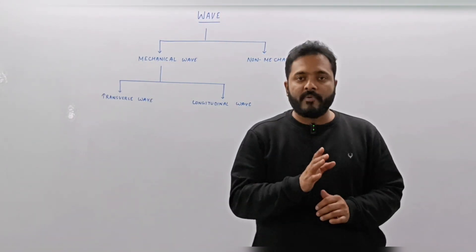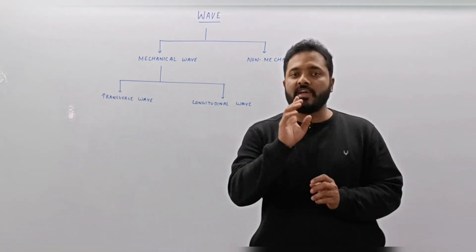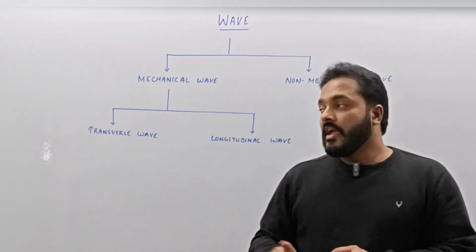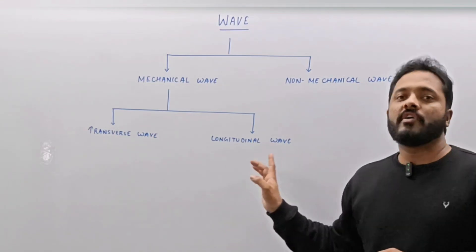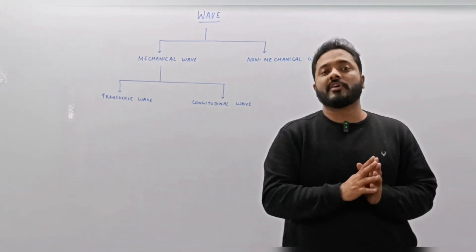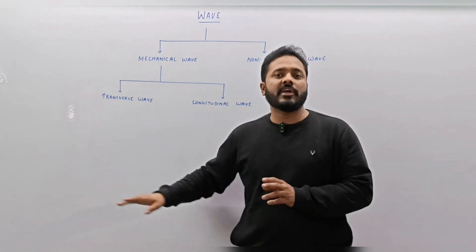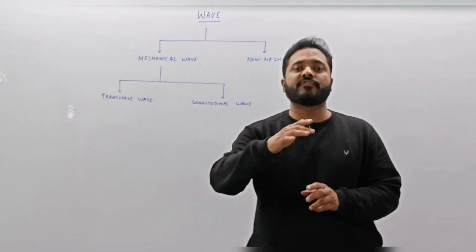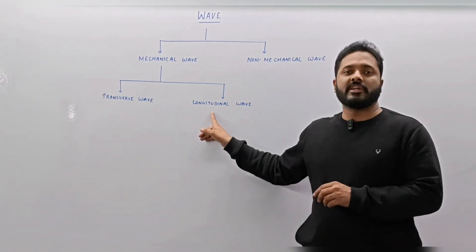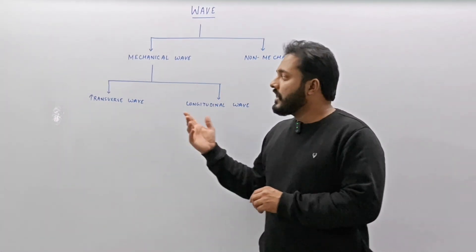If the wave is propagating perpendicular to the direction of disturbance, then the wave is regarded as a transverse wave. When we say longitudinal wave, the wave is propagating in the direction of disturbance. Transverse waves consist of alternating crests and troughs, and longitudinal waves consist of alternating compressions and rarefactions.